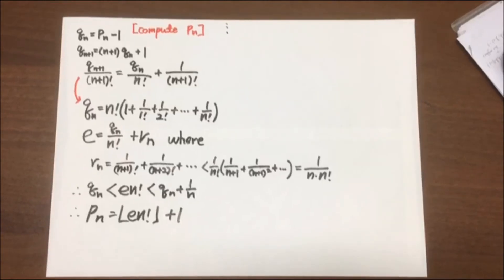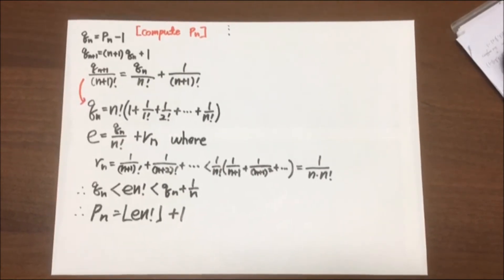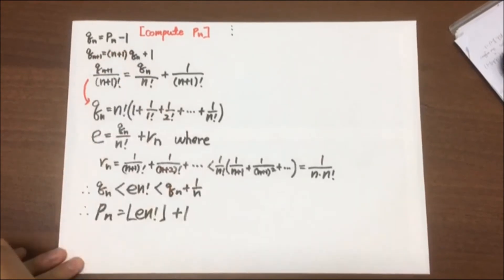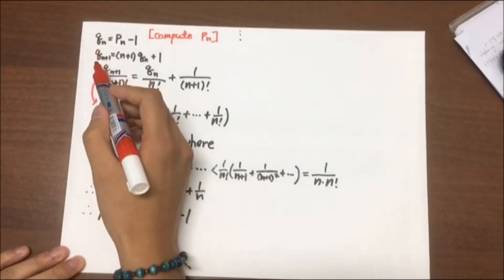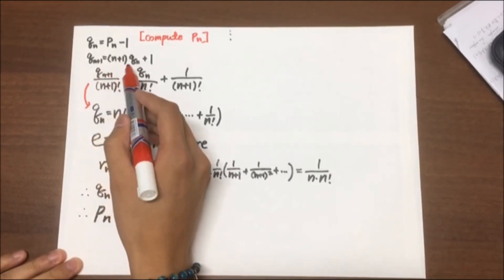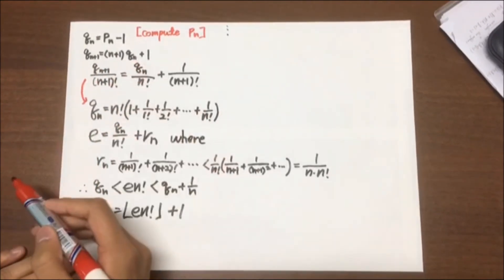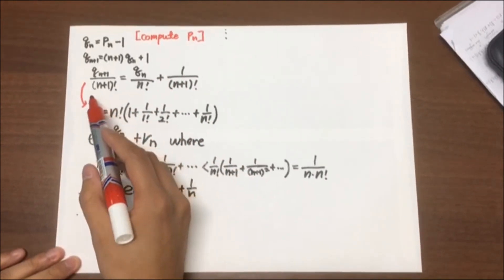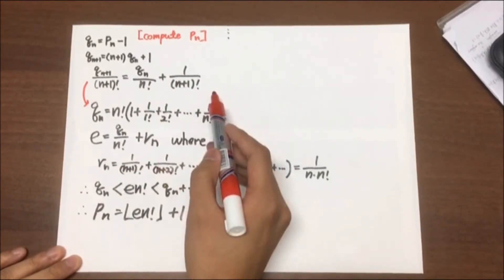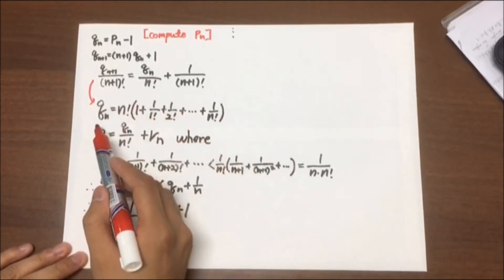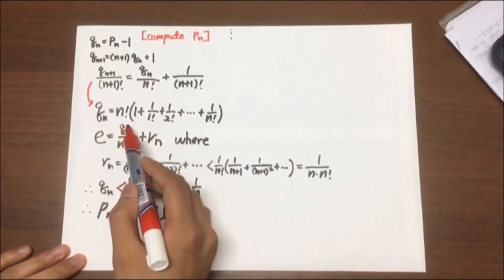So from now, the number of P_N. Let Q_N be equal to P_N minus 1. Then by the recurrence relation, Q_{N+1} is equal to (N + 1) times Q_N plus 1. If we divide each side of the equation by (N + 1) factorial, it gives us this equation. And from here, we can easily see that Q_N is equal to N factorial times this formula.